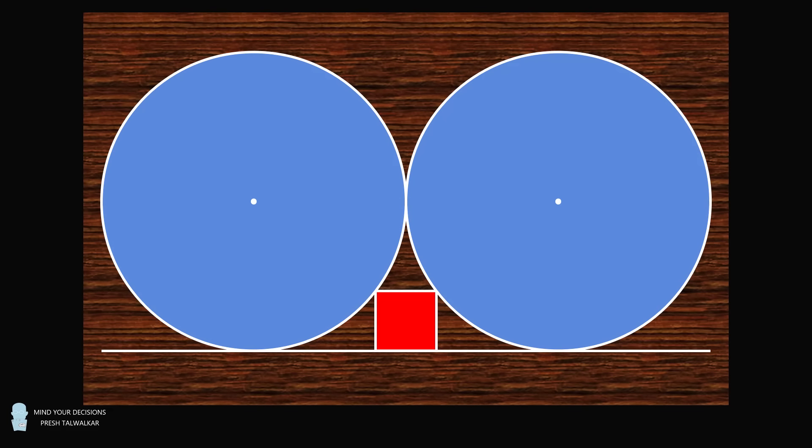It is an example of a Sangaku, which was a wooden tablet that contained a mathematical theorem or geometric problem that was given as an offering during temples in Japan during the Edo period. This particular problem appeared at the Katayama Hiko shrine in 1873.